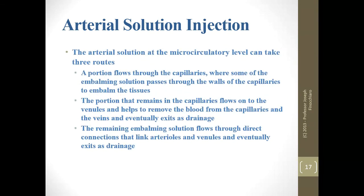At the microcirculatory level, arterial solution can take three routes: a portion flows through capillaries where some embalming solution passes through the capillary walls and pores to the cells and tissue spaces; the portion remaining in the capillaries flows into the veins, helping remove blood, and exits as drainage; and the remaining embalming solution flows through direct arterial-to-venule connections and eventually exits as drainage.